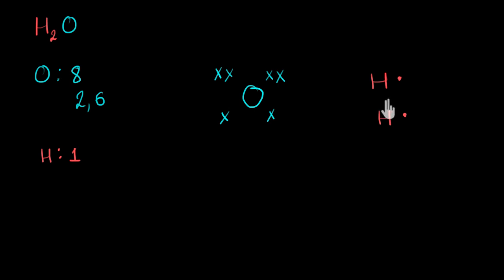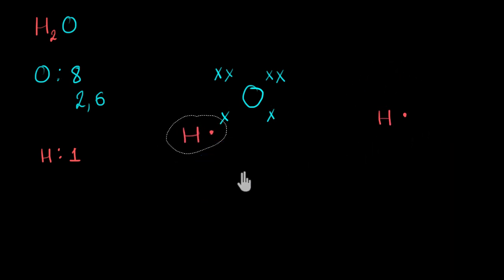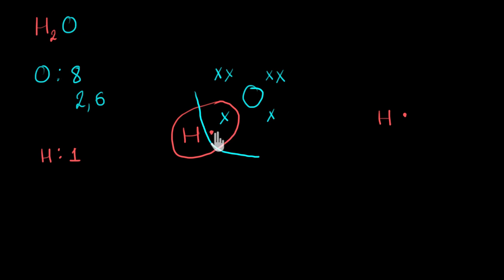Hydrogen currently has one electron, so it needs one more. To gain one electron, it needs to share one electron with oxygen. So let's make hydrogen and oxygen share one electron each with each other. I'll draw a circle to denote the sharing — this shows that hydrogen and oxygen are sharing one electron each. If you focus on hydrogen, its duplet is now complete. These two shared electrons are not exclusively part of hydrogen or oxygen; they go around both of them, so both atoms experience these two electrons.